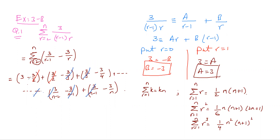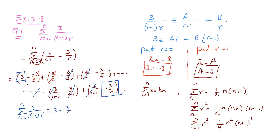So what are we left with? Just two terms: 3 and minus 3/n. So the sum of the series from r=2 to n of 3/((r-1)·r) equals 3 minus 3/n. We used partial fractions and substituted values to show all middle terms cancel, leaving just two terms.